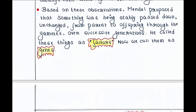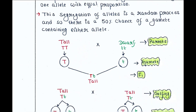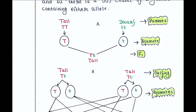So let's check the cross first. Mendel crossed tall and dwarf pea plants to study the inheritance of one gene. The cross-pollination of tall and dwarf plants resulted in tall plants only. He called these the F1 generation. Capital TT and small tt are called the genotype of the plant, while the descriptive terms tall and dwarf are the phenotype.